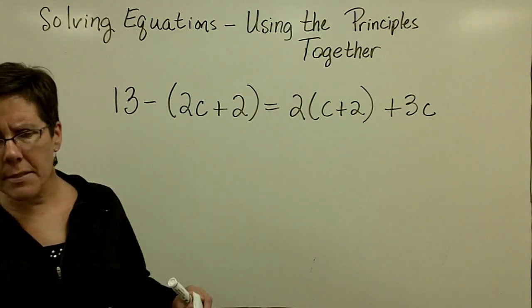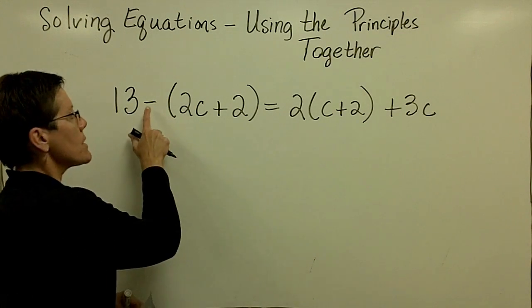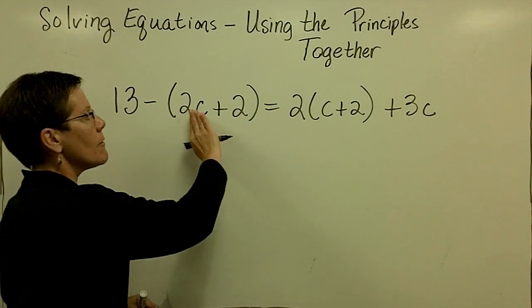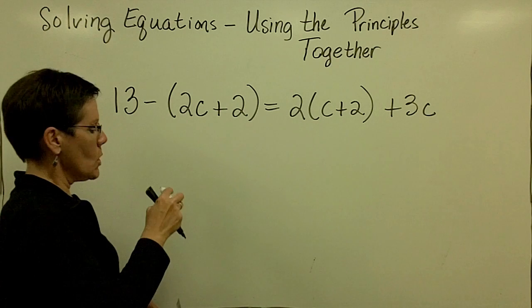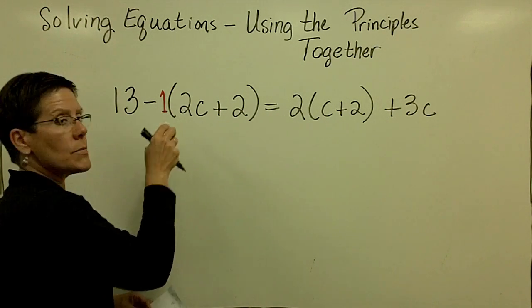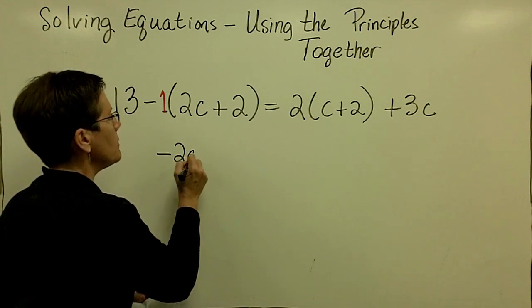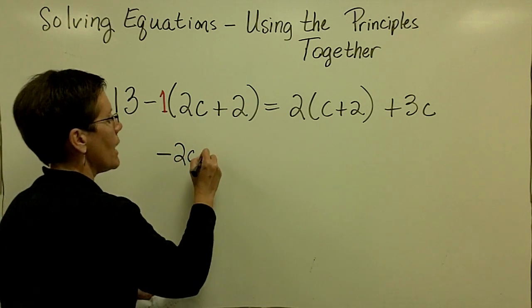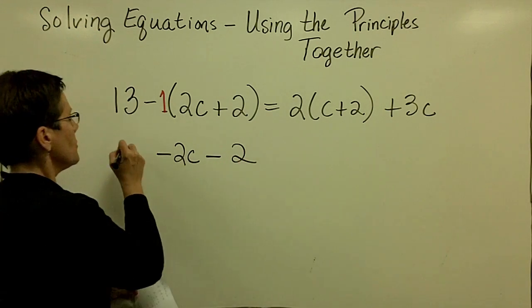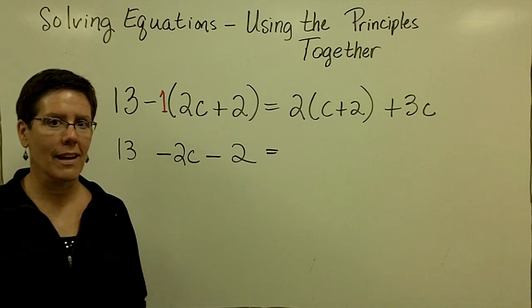So parentheses, minus signs, collecting like terms, all kinds of things going on here. I'm asking you to give me the opposite of everything that's in there. Or you can think I'm asking you to take a negative 1 times that 2 and get a negative 2c and a negative 1 times a positive 2 is a negative 2 and bring down your 13. We've gotten rid of the parentheses on the left-hand side.